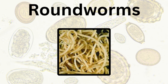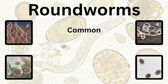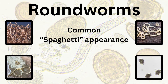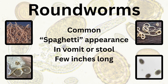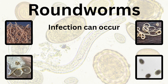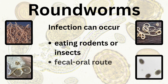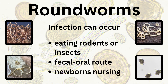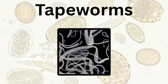First up is roundworms — by far the most common parasite in the group. If you have ever said, my cat just vomited up what looks like spaghetti, you've just diagnosed a roundworm. They can also be passed in the stool, are a few inches long, and whitish in color. Cats become infected with roundworms by either eating an infected animal or insect, the fecal-oral route — eating something contaminated with infected feces — or very young kittens can get them from their mother's milk while nursing.